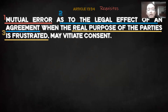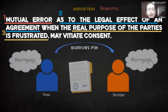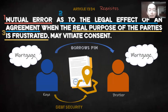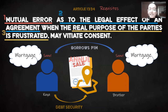To better understand, here is an example. Kuya borrows one million pesos from brother, and both kuya and brother enter a contract of mortgage in which kuya mortgages his land as debt security. Though they intended to enter into a contract of mortgage, they executed a document for contract of sale instead, because both believed that they have the same legal effect. Therefore, the consent is vitiated and the remedy here is to annul the contract. So there is mutual error, the mistake is as to the legal effect, and the purpose is frustrated. That's all. Thank you, and stay tuned for the next videos.